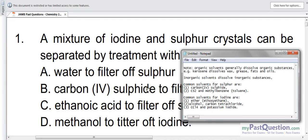So, in this question, the correct answer is B, carbon 4 sulfide to filter off iodine. Take note of this question, in case you see it in your next exam.